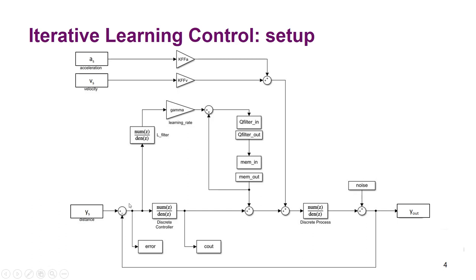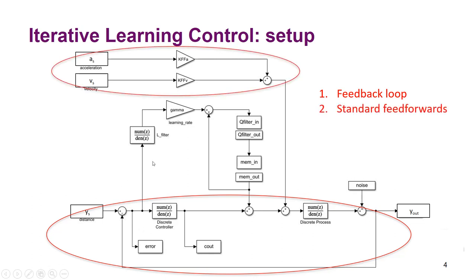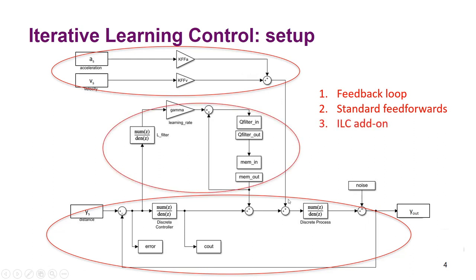Here is the complete block diagram of a system with ILC. This is the standard feedback loop — set point for position, a discrete controller, and a discrete process. Added to this feedback loop, we have standard feed forwards — acceleration and velocity feed forward — which are always useful to implement. And this is the ILC add-on, the iterative learning control add-on, which we are going to discuss in the next slides.